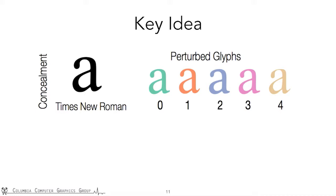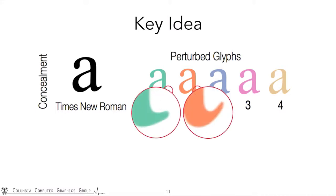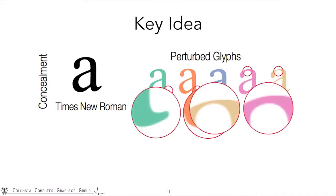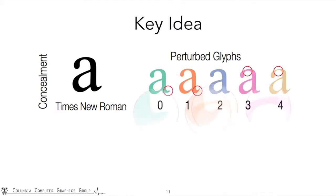Here are five characters with perturbed glyphs. They will look the same at first glance, but there are some subtle differences if you look closely, like on the tail or on the head. Each perturbation can represent different information. At decoding time, our method recognizes the perturbed glyph to extract this information.